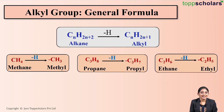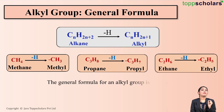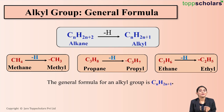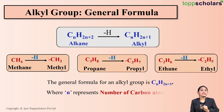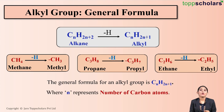From this we understand that the general formula of alkyl group is CnH2n+1, and what does n stand for here? n stands for the number of carbon atoms.